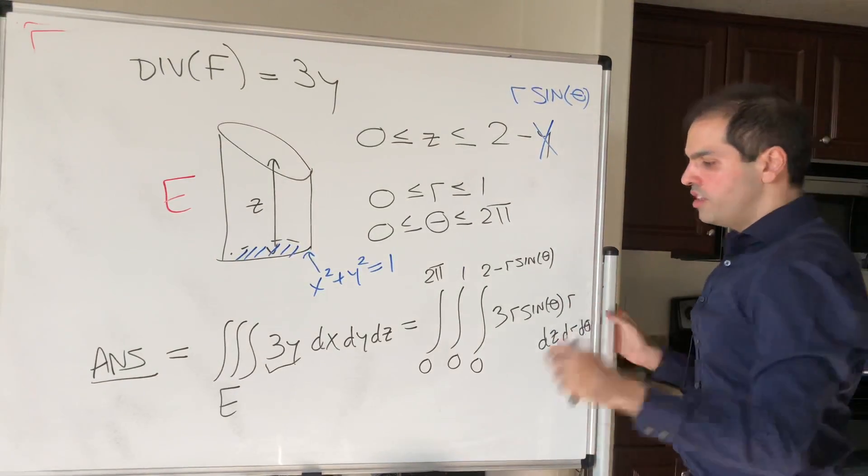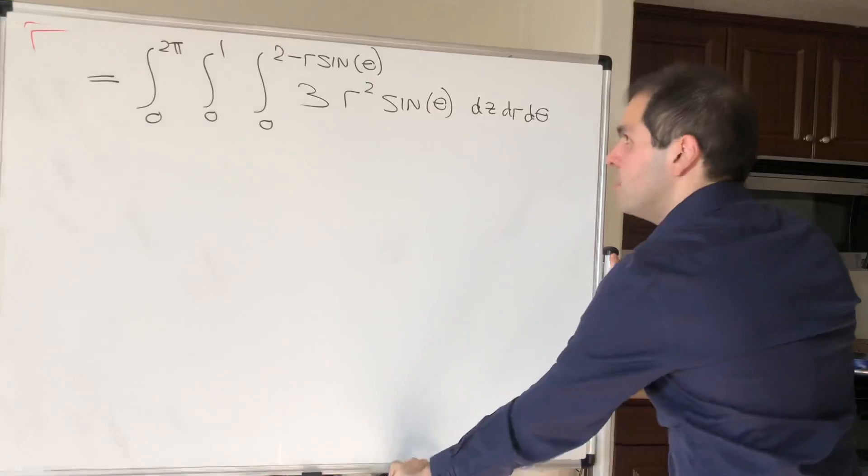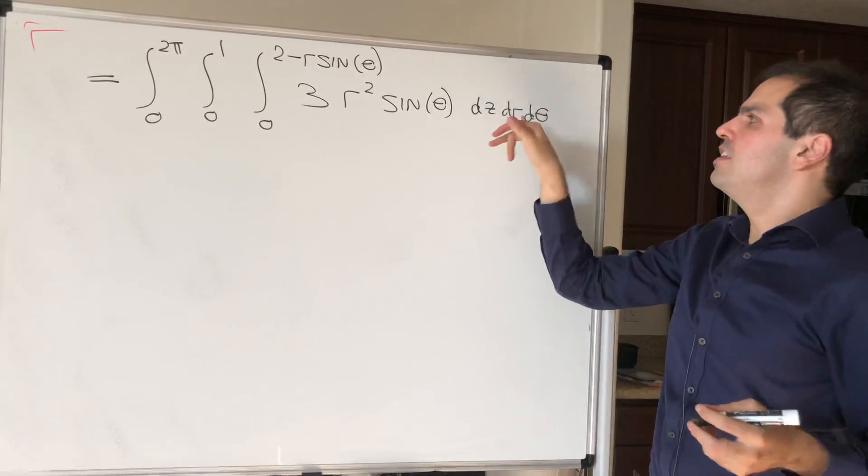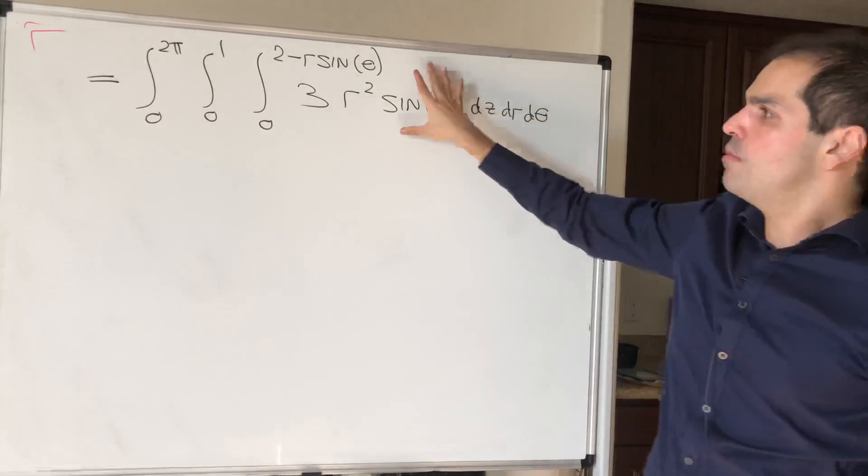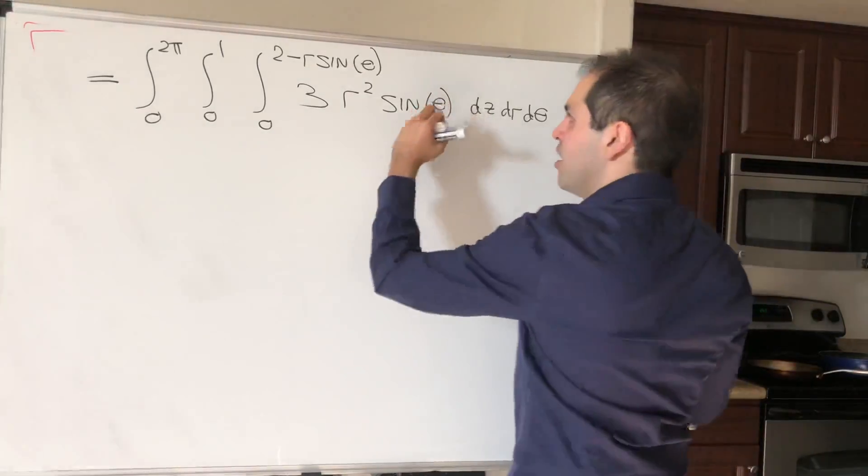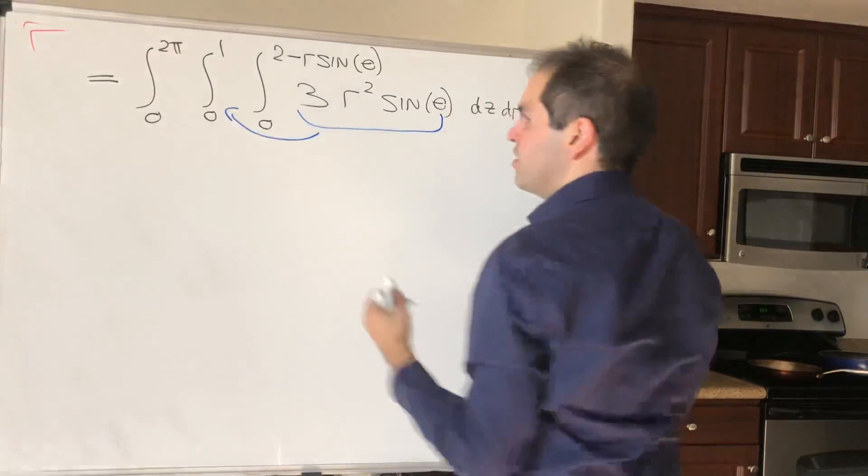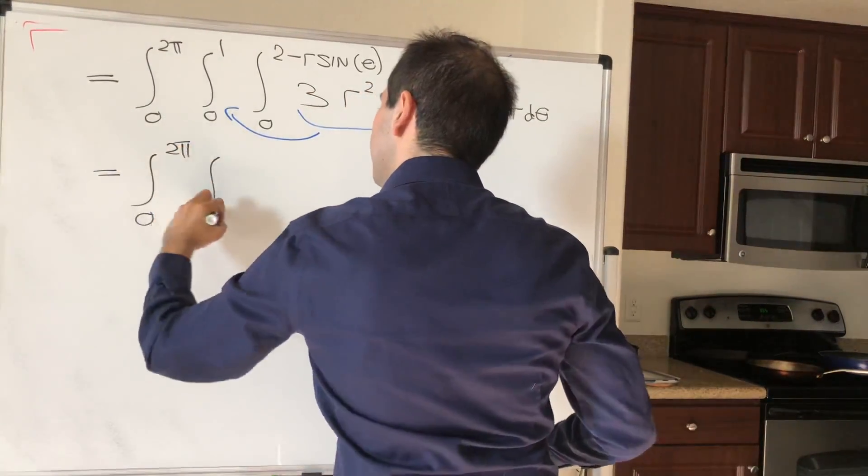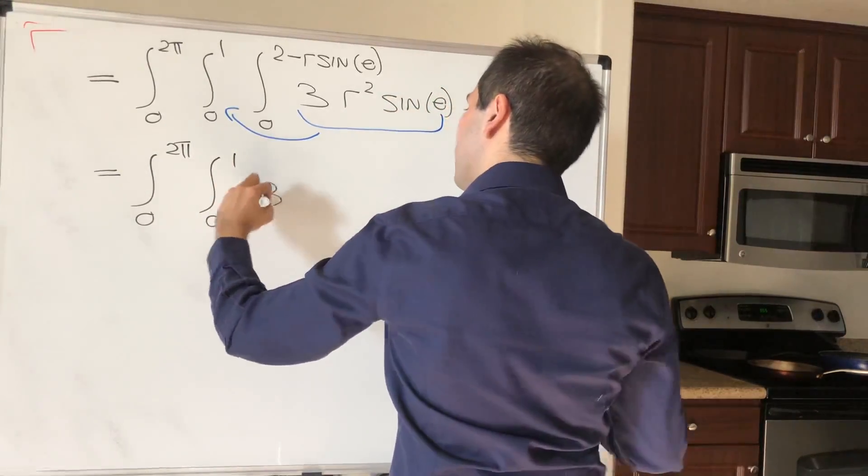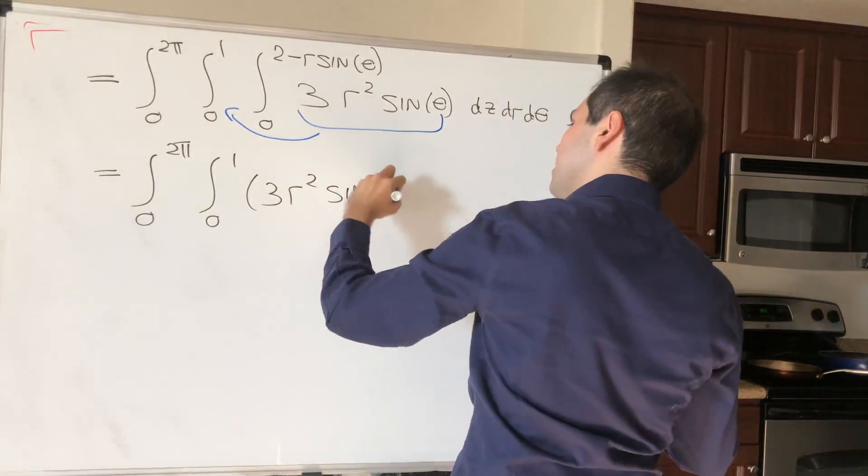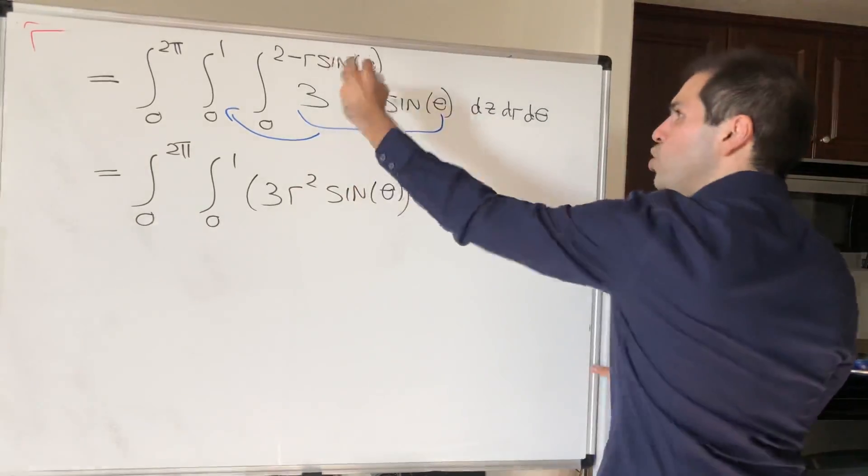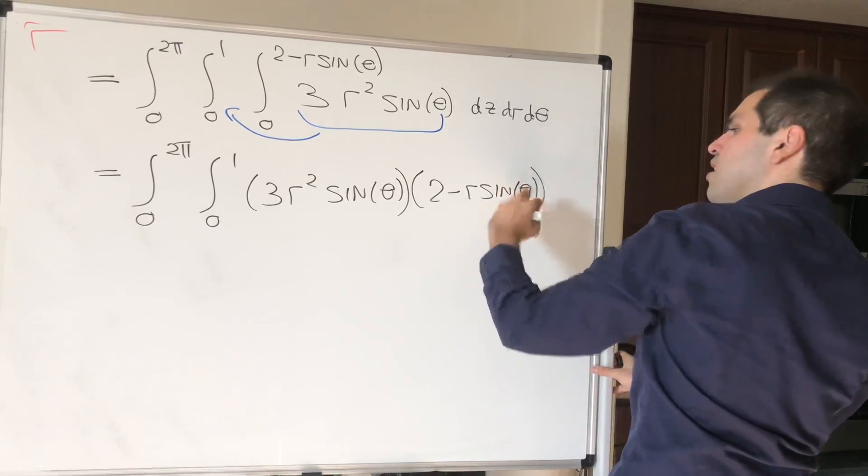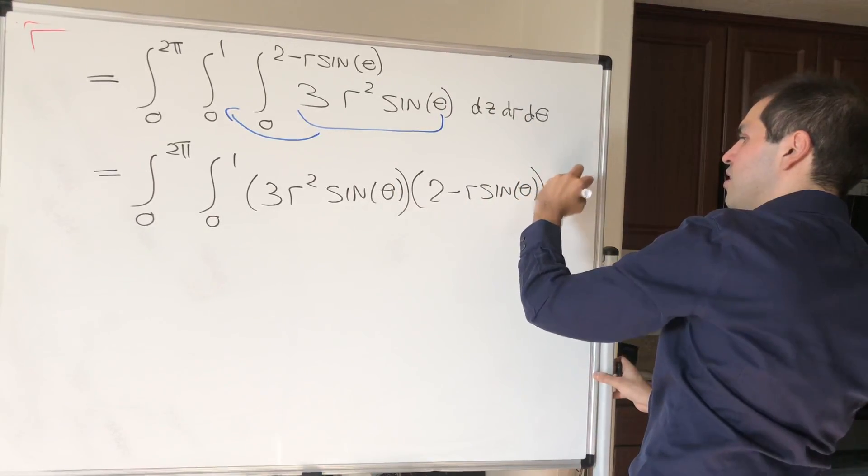And then we just need to integrate that, so let's do the calculation. And so what we had to calculate is the integral of 3r squared sine of theta dz dr d theta, but because there's no z here, we can just pull this outside. So this becomes the integral from 0 to 2 pi, integral from 0 to 1 of 3r squared sine of theta, and then 2 minus r sine of theta, and then minus 0, so dr d theta.